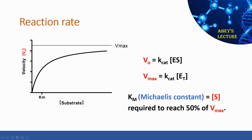Looking at the graph, this is the maximum velocity that the enzyme can reach, and this is the initial velocity V0. Therefore, 50% of the enzyme's maximum velocity will be right here. If we draw a horizontal line, we reach this coordinate, and then drawing a vertical line we get to the substrate concentration — that is the substrate concentration required to reach 50% of the reaction's maximum velocity, which is Km.